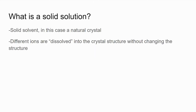First we need to ask what a solid solution is. A solid solution has two parts: the solute and the solvent, and in this case the solid solution is going to be a natural crystal. A good example is a crystal with two different types of cations that are both within that crystal but don't change the crystal structure. You could replace one cation with the other and the crystal structure would still not be changed. That's what a solid solution is — when the crystal structure of the solvent isn't changed by the solute units within it.